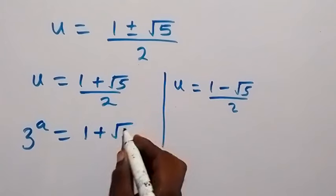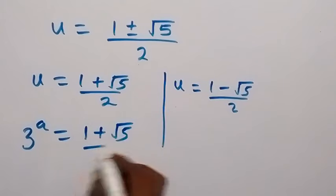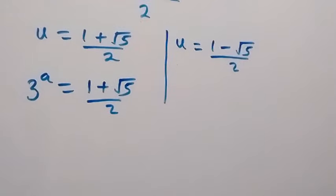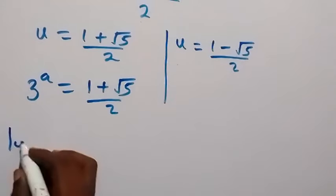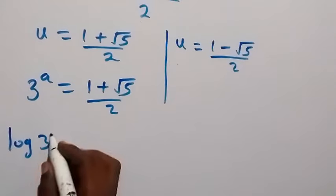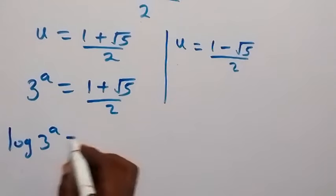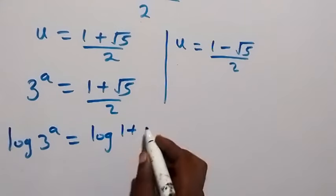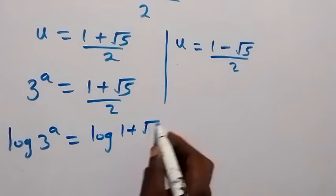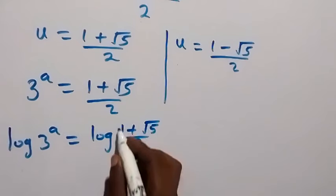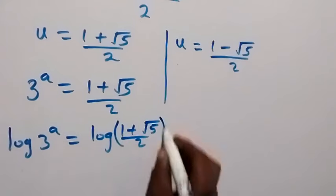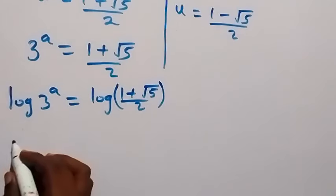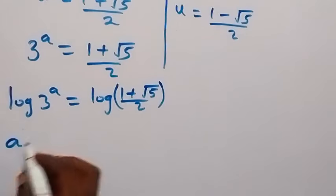Taking the logarithm of both sides and applying the power law, we bring the exponent a to the front. We then have a times log 3 equals log of the quantity 1 plus root 5 over 2.